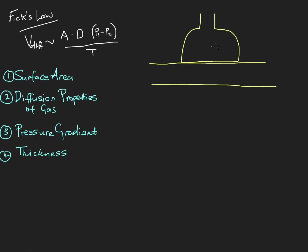Remember that we're talking about diffusion of a gas from the alveoli across this blood-gas barrier into the blood. And eventually that will then bind with hemoglobin and do all the things that it should do, but we're just looking at this diffusion process. What I want to do in this video is briefly touch on each one of these factors that affect diffusion, and give an example of either a disease process or something we can do as healthcare professionals.